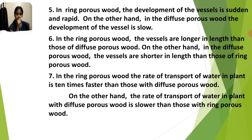Number seven: in ring porous wood the rate of transport of water in plants is 10 times faster than those with diffuse porous wood. On the other hand, the rate of transport of water in plants with diffuse porous wood is slower than those with ring porous wood.